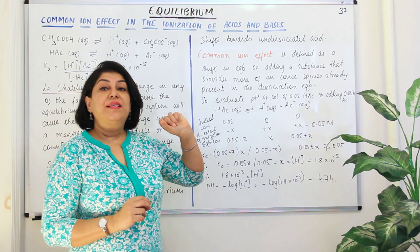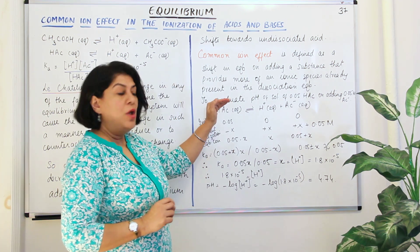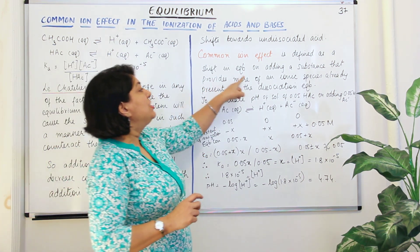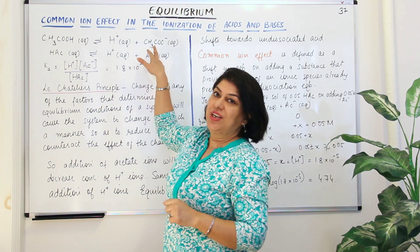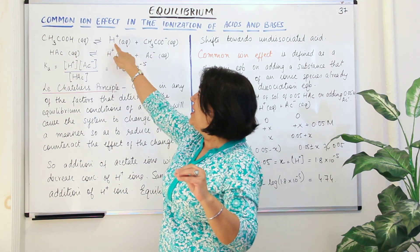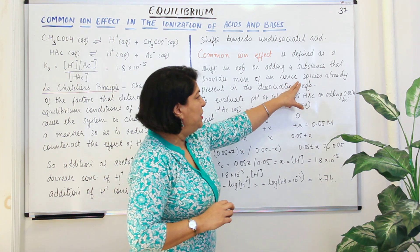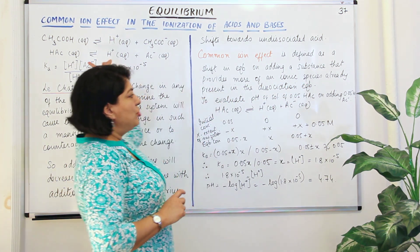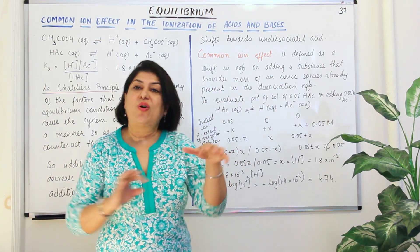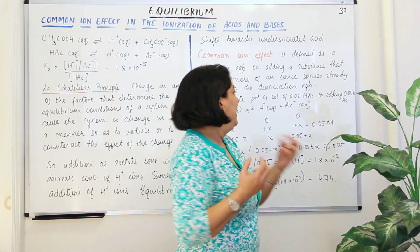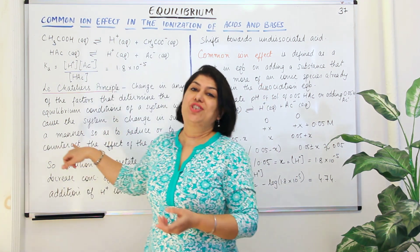Common ion effect is defined as a shift in equilibrium on adding a substance that provides more of an ionic species already present in the dissociation equilibrium. When you add a species that has an ion common to this particular reaction, it provides more of an ionic species already present. Such an ion is a common ion, and the effect it has on equilibrium is known as common ion effect — and that effect takes place according to Le Chatelier's principle.